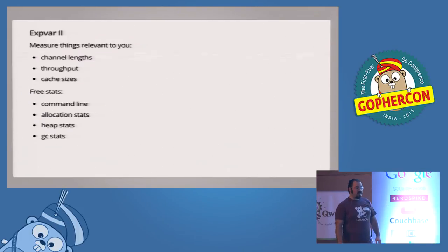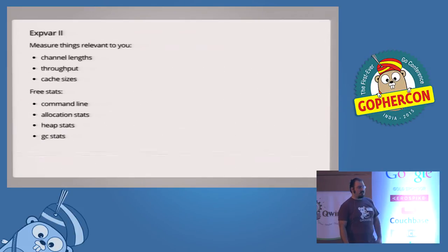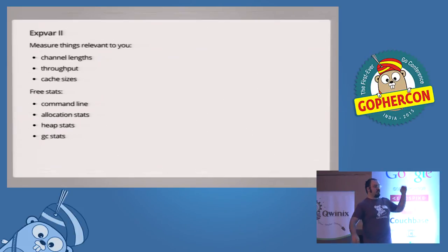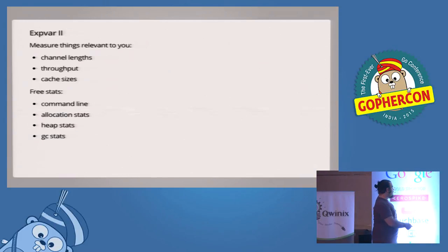It'll probably be shocking when you first hit /debug/vars — it's going to be this huge thing with tons of JSON and you won't be able to find the variable you care about. But all this stuff is really useful.